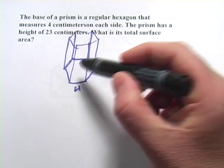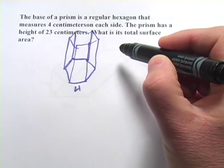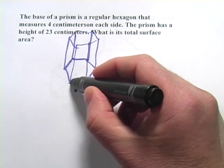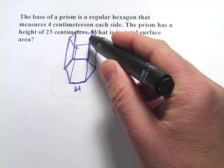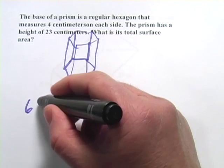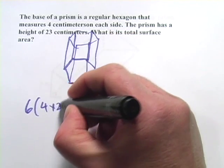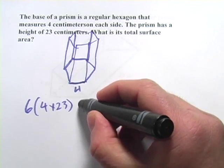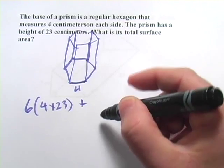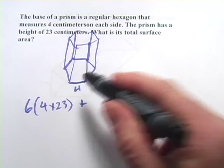What we're going to have here is six of these long flat sides around, and they're going to be 4 by how tall this is, which is 23. So we're going to have six of the 4 by 23 plus two of the hexagons. Well, what's the area of that hexagon?